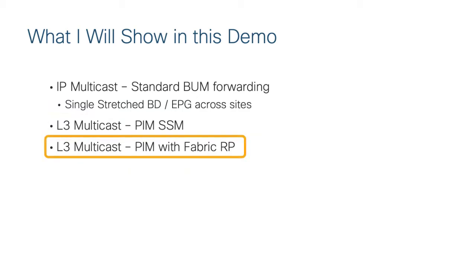In my third example, I'll continue on with layer three routed multicast. In this case, I'm going to be using PIM, but with what's called a fabric rendezvous point. This is something that Max talked about in his lecture series.